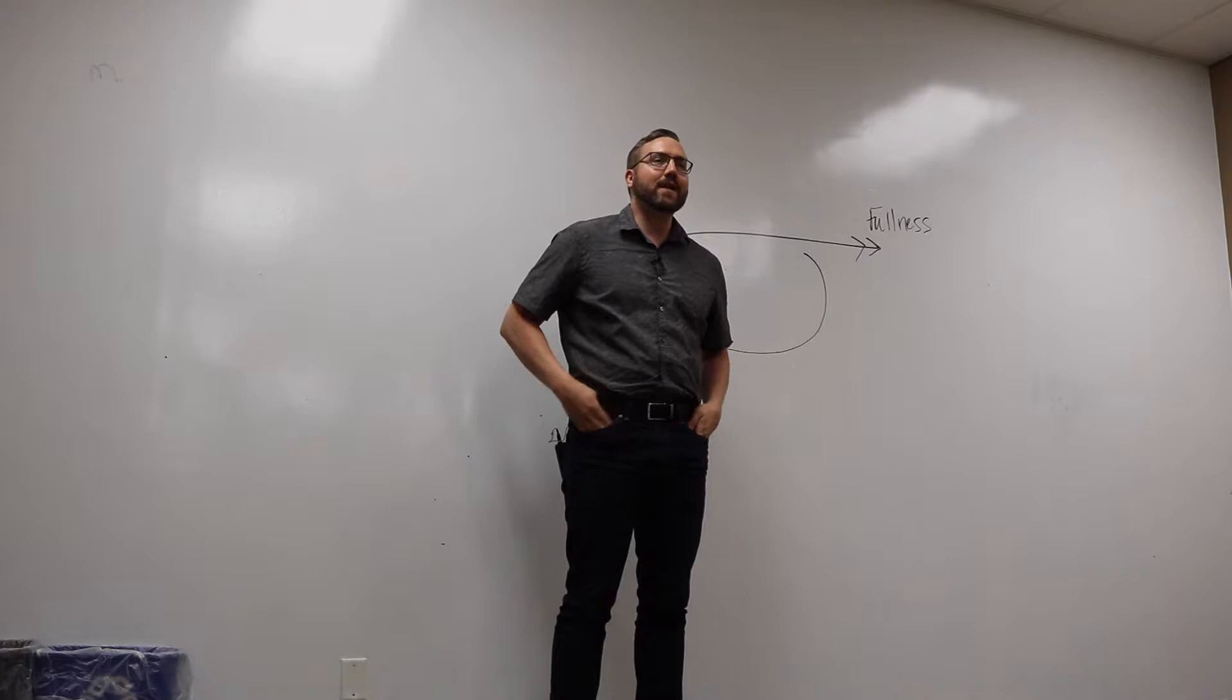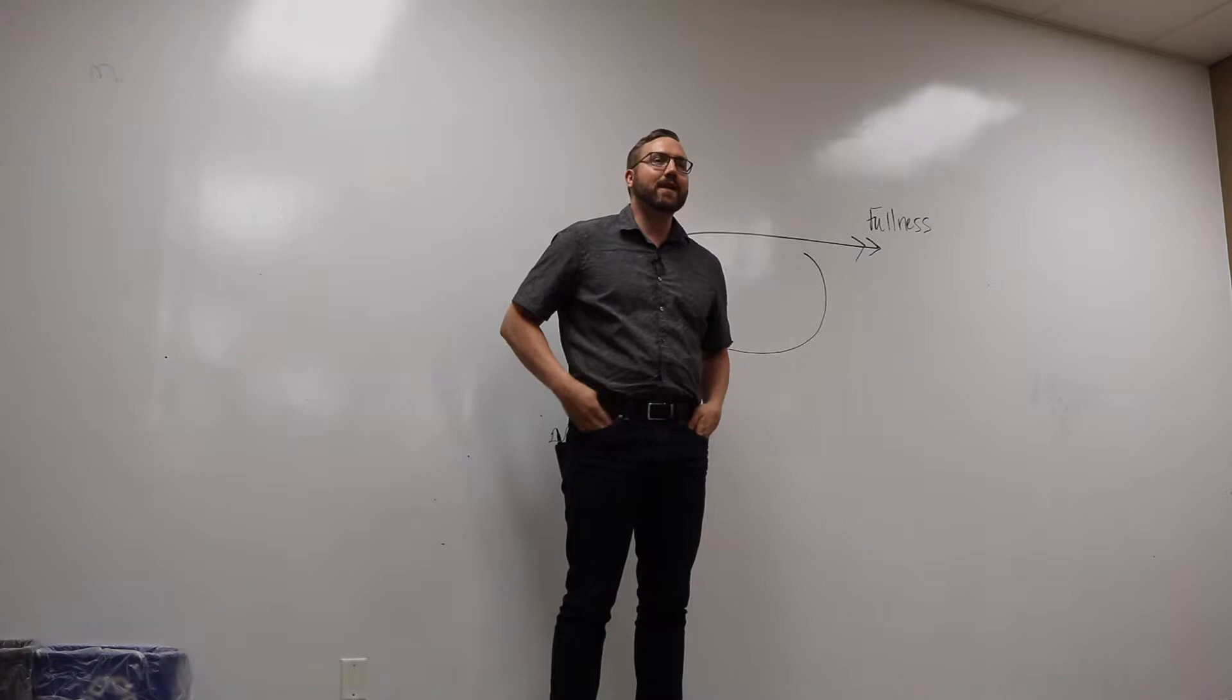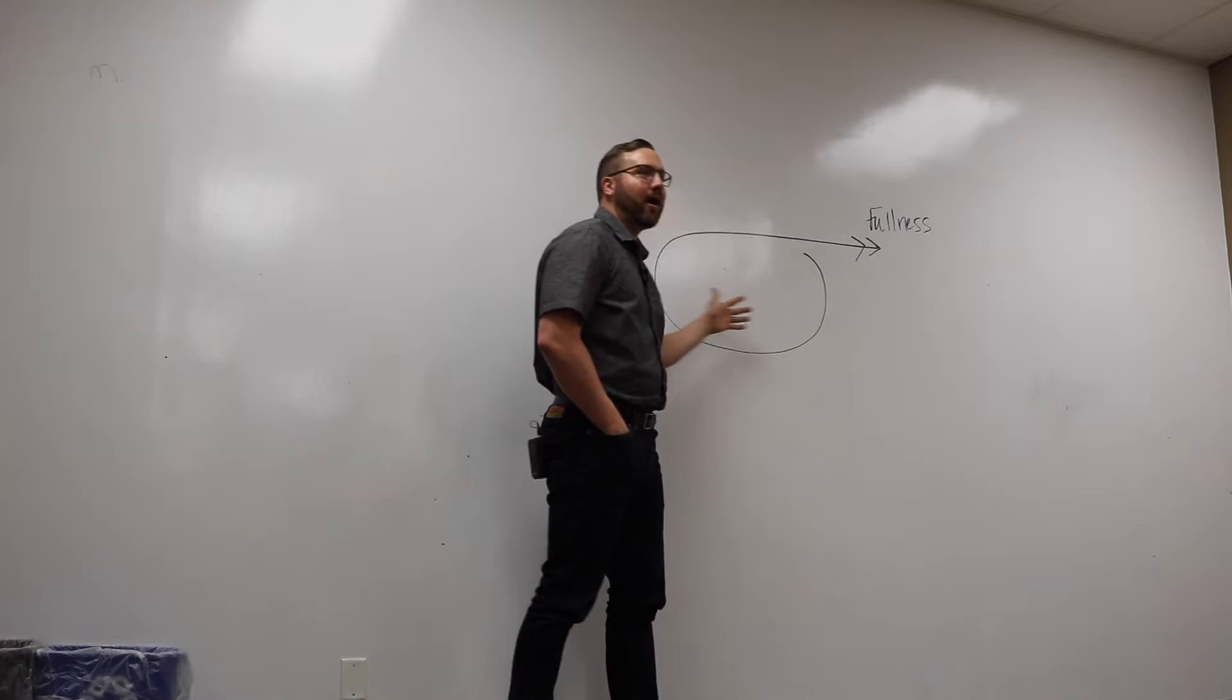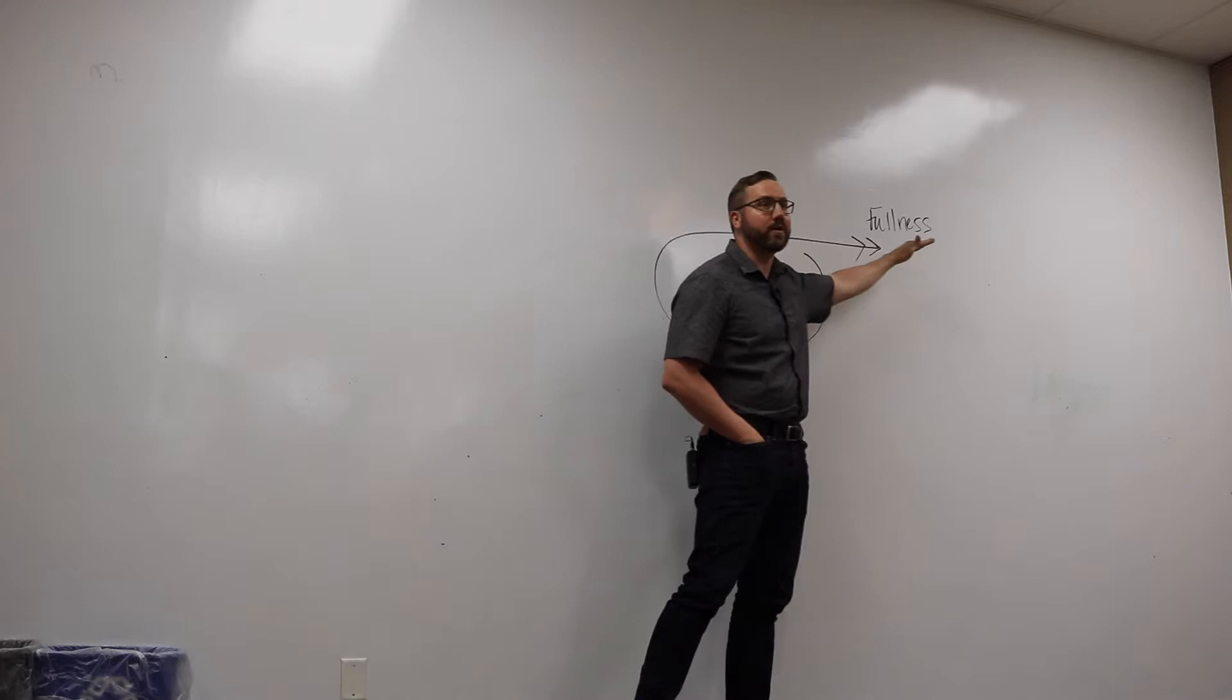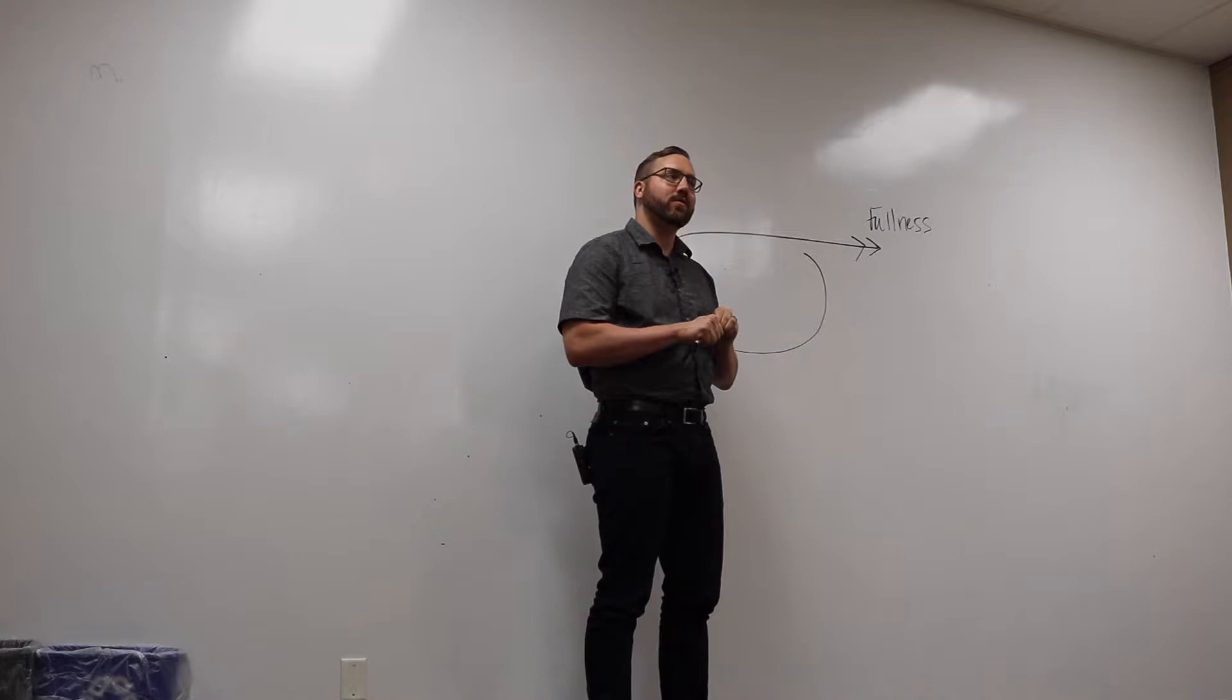So our life works in these cycles. Sometimes a cycle lasts two weeks. Sometimes it lasts 20 years. And if we understand the cycle, how it works, we can prevent it from looping around and becoming a continuous loop where we don't go outward. And so I'm going to share with you these cycles really quickly. Does that make a little bit of sense so far?